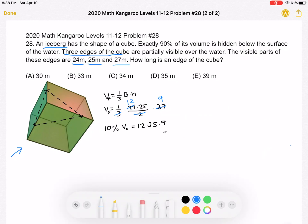So V sub C represents the volume of the cube. And 10% of the volume of the cube is equal to the volume of the pyramid, which is 12 times 25 times 9. So let's multiply by 10 on both sides. So we get that the volume of the cube is 10 times 12 times 25 times 9.